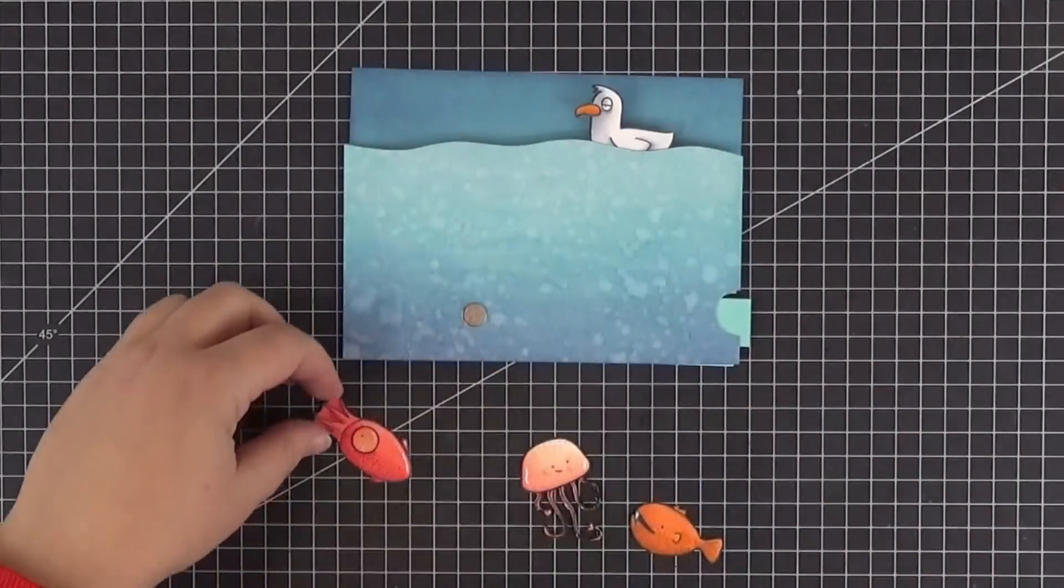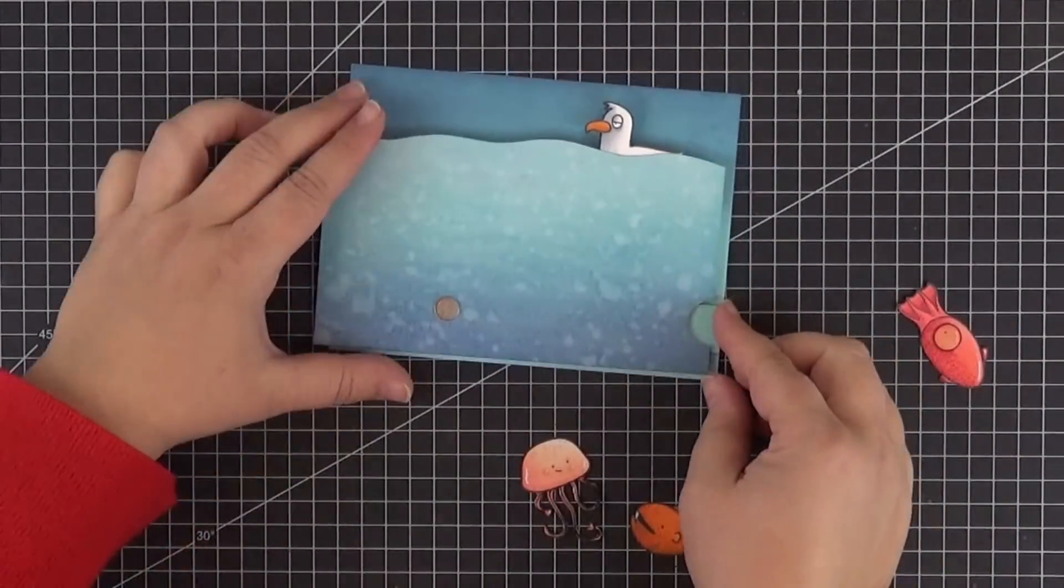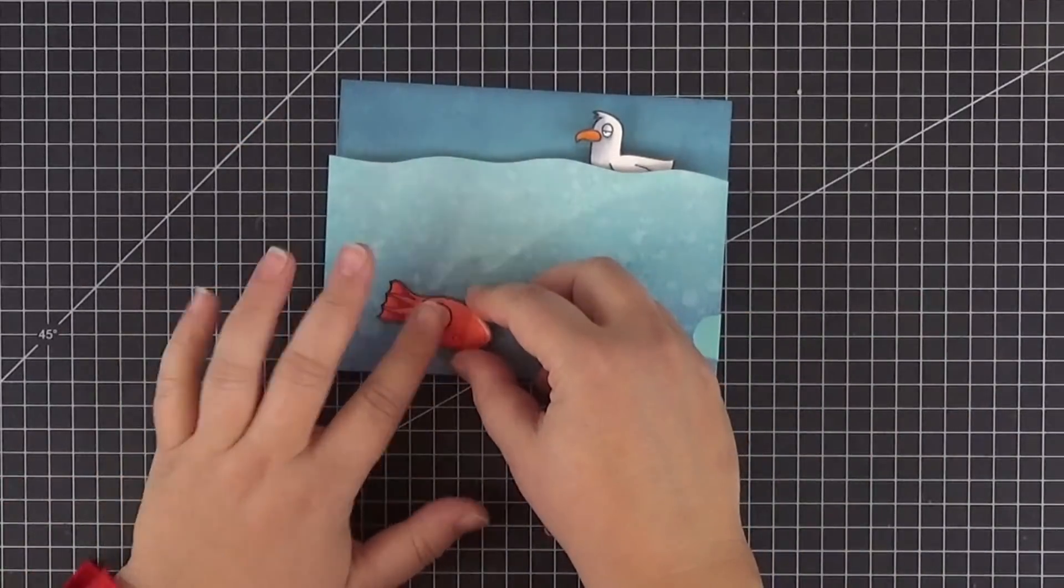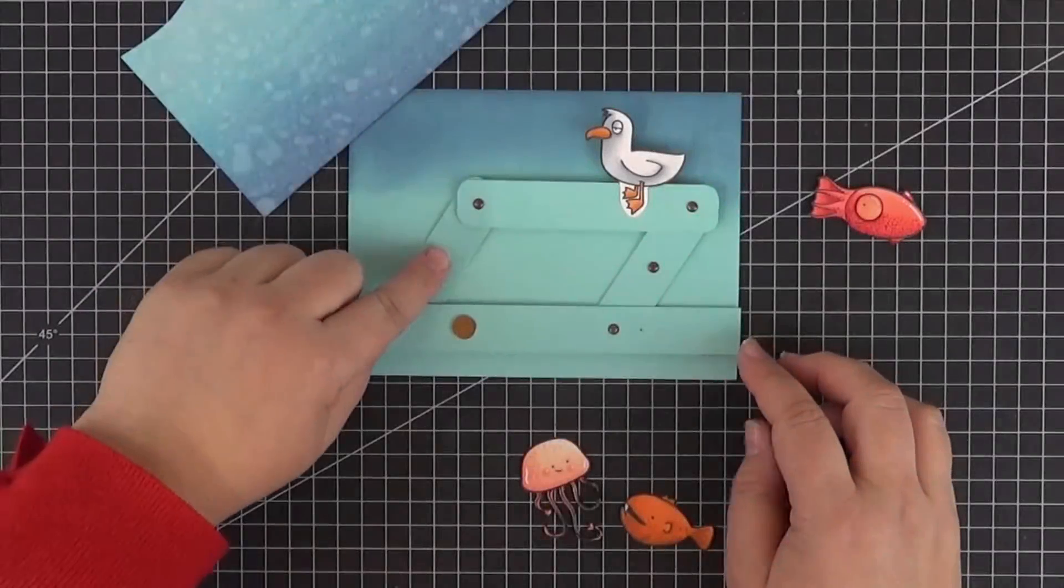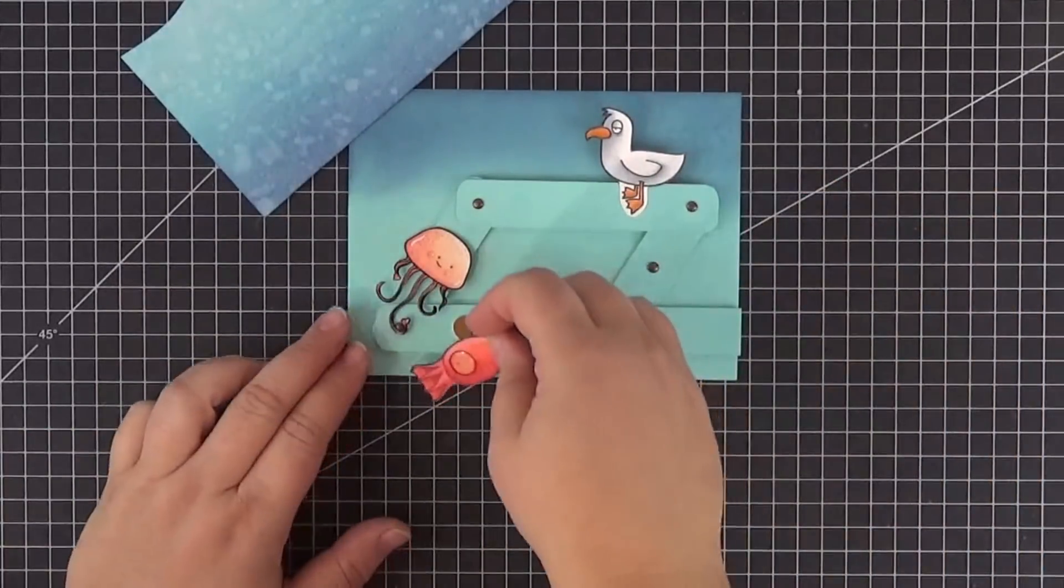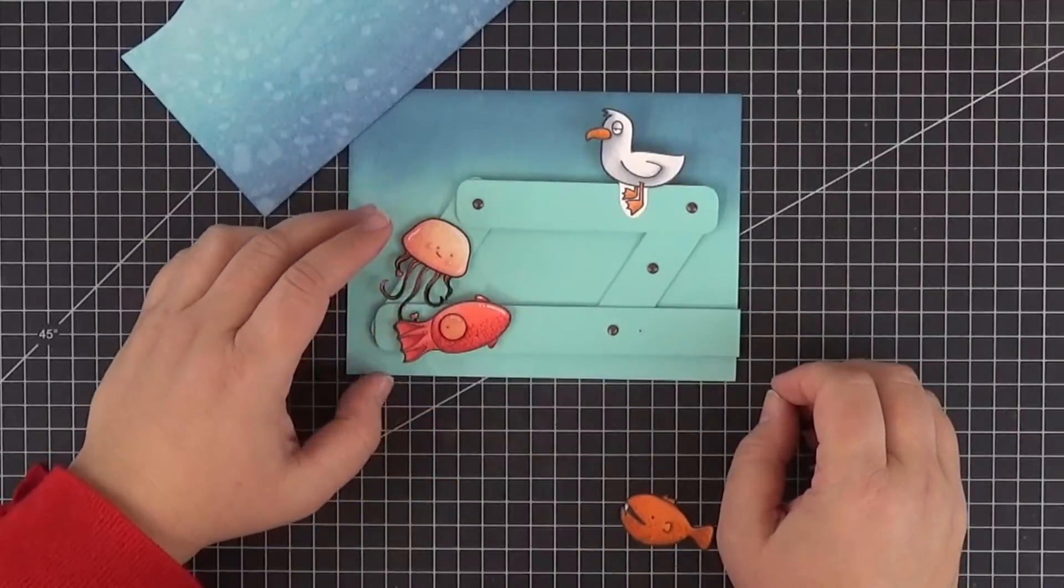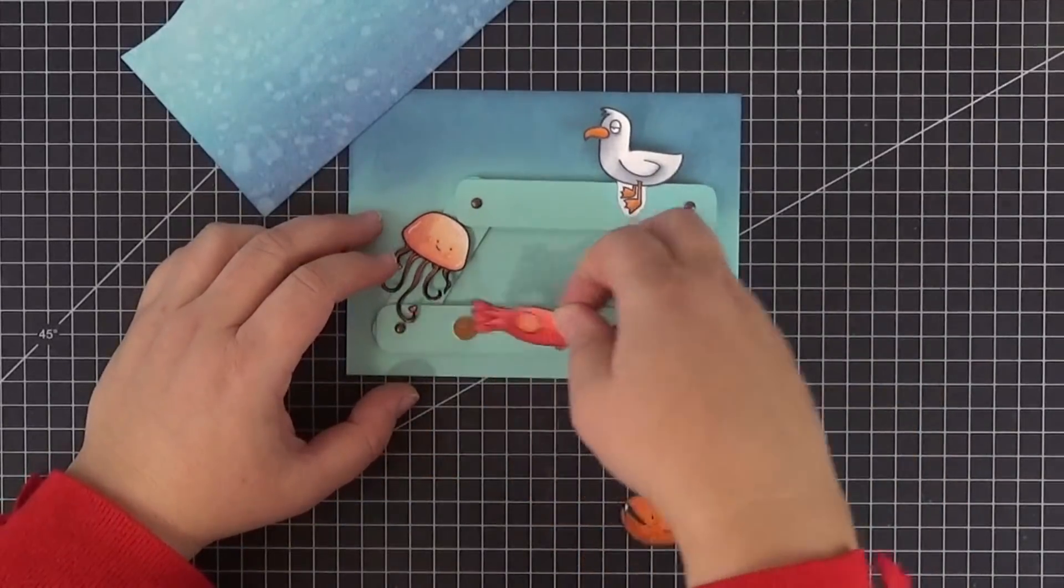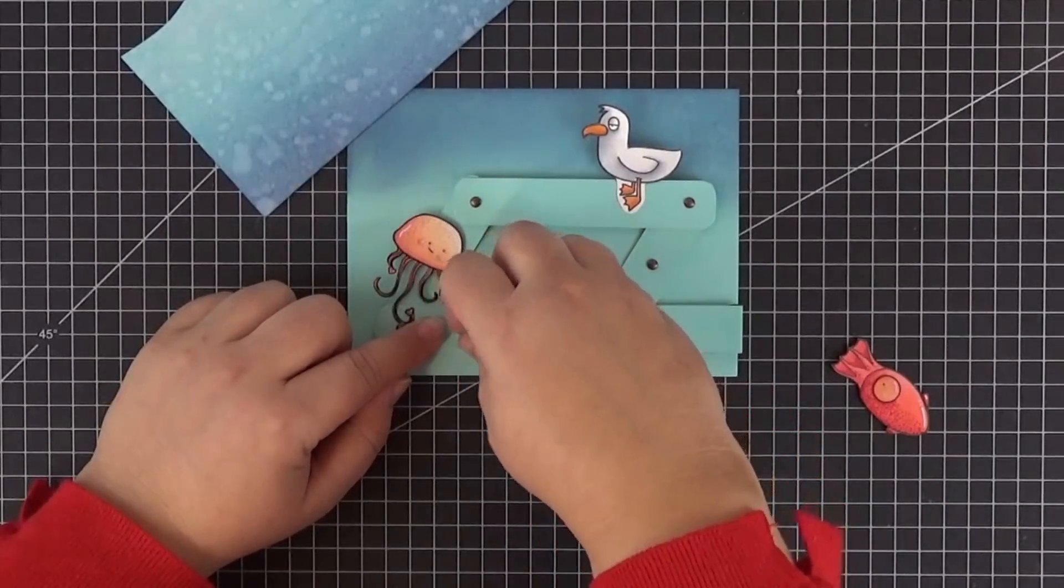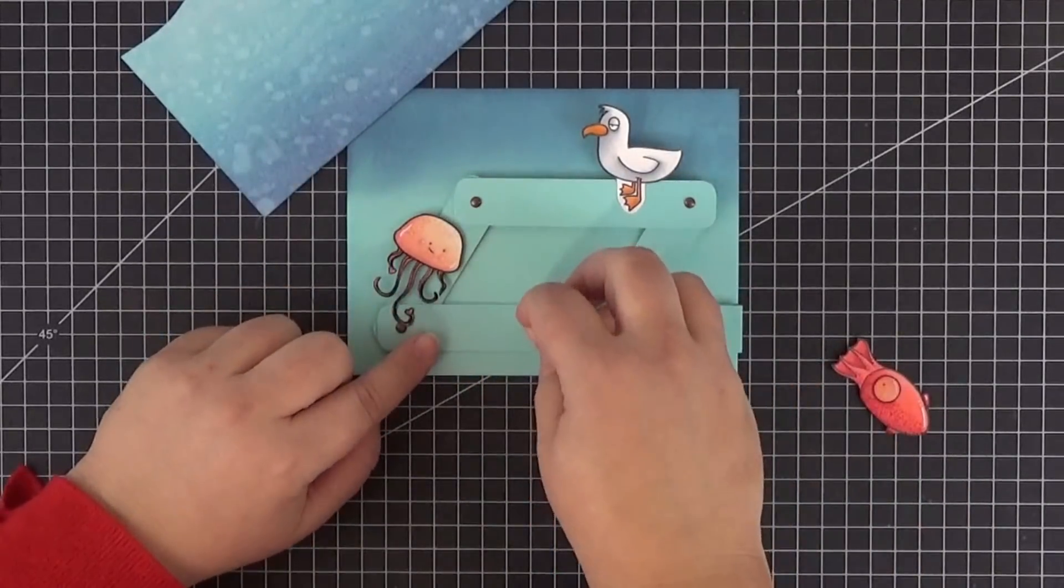I sometimes make a prototype of the card beforehand, and sometimes I just record the process with my camera straight away and end up having to correct things as I move along. This time when I placed the jellyfish on top of the rotating brad to the left, I noticed that I had to move the squid a little bit more to the right. Luckily you can carefully peel off the magnetic disc and reattach it.